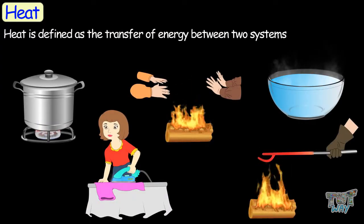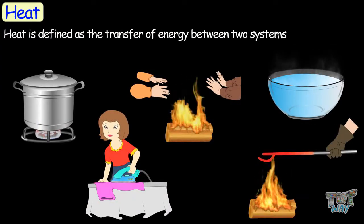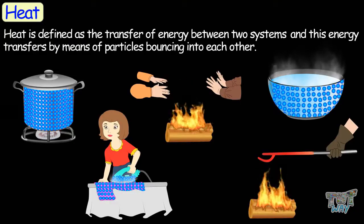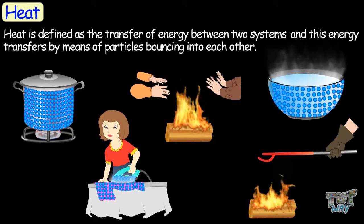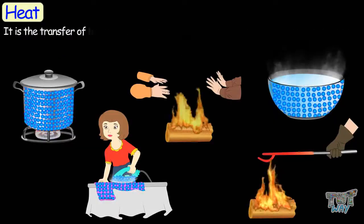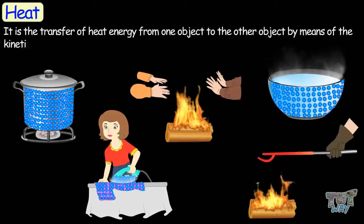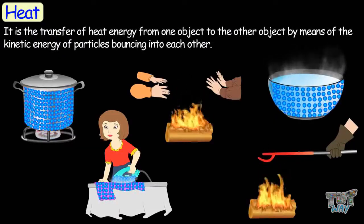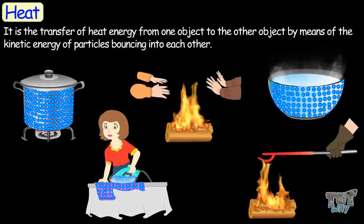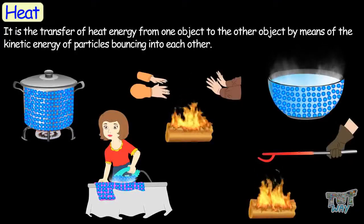Let's first learn what is heat. Heat is defined as the transfer of energy between two systems, and this energy transfers by means of particles bouncing into each other. So we can say it is the transfer of heat energy from one object to the other by means of the kinetic energy of particles bouncing into each other.